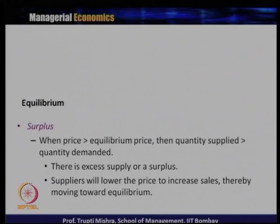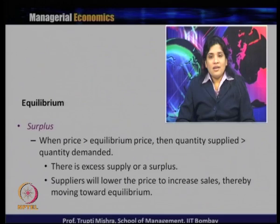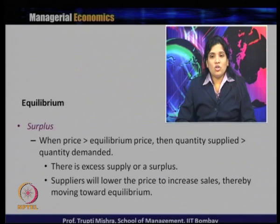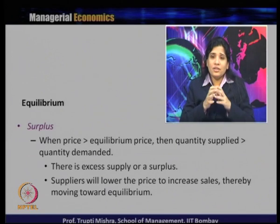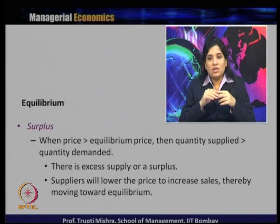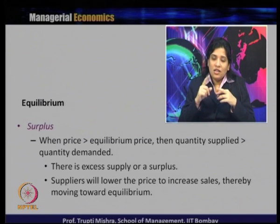When demand equals supply, the market reaches equilibrium. But there can be deviations. A surplus occurs when quantity supplied is more than quantity demanded - this happens when the price is greater than equilibrium price. Because price and quantity supplied are positively related, more price means more quantity supplied. At any price greater than equilibrium price, quantity supplied is greater than quantity demanded, leading to excess supply or a surplus in the market.